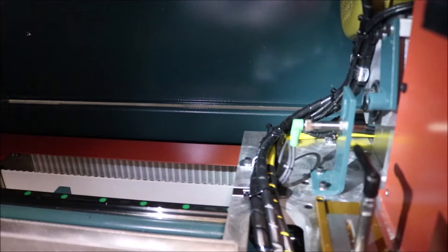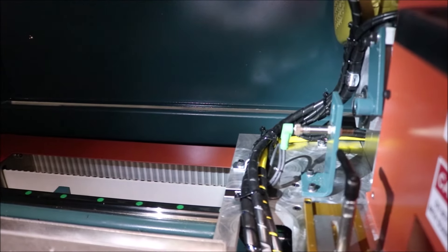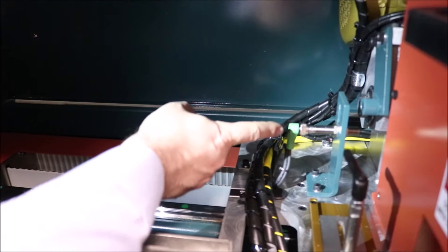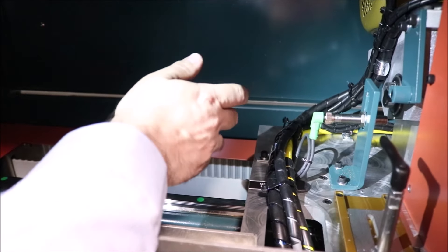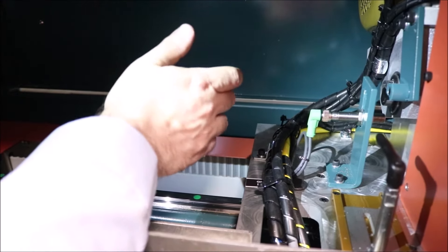The other adjustment that you have on a down cut servo saw is the adjustment of the blade height limit switch. Depending on your product, you can adjust it either to go cut higher or to cut lower.